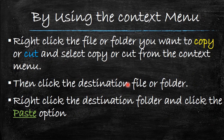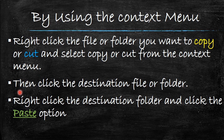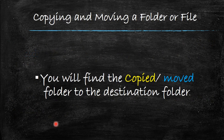The second method to move or copy a file is by using the context menu. The context menu appears when we right-click on a specific object. Right-click the file or folder you want to copy or cut, and select Copy or Cut from the context menu. Then navigate to the destination folder, right-click it, and click the Paste option.